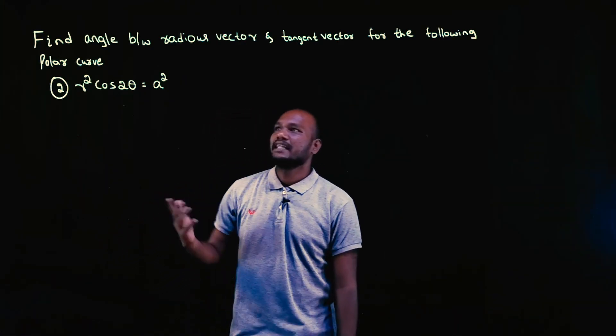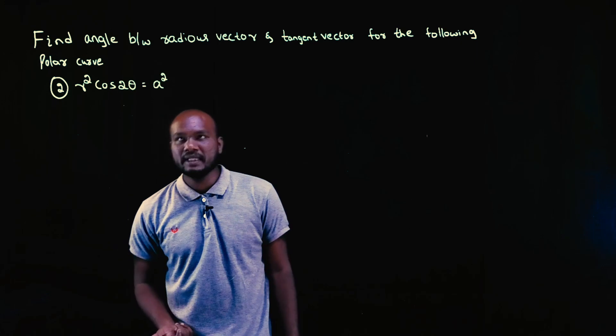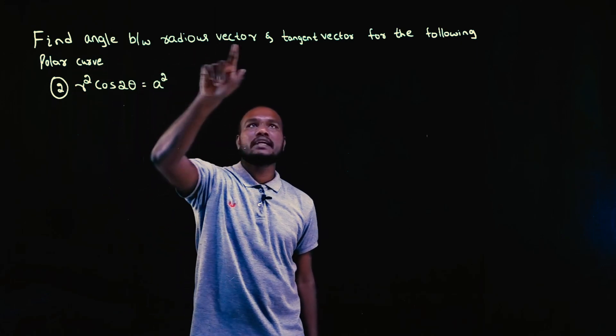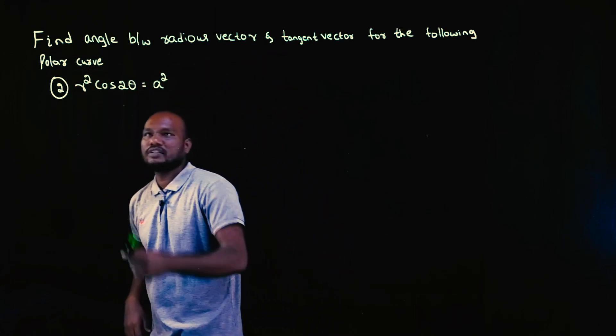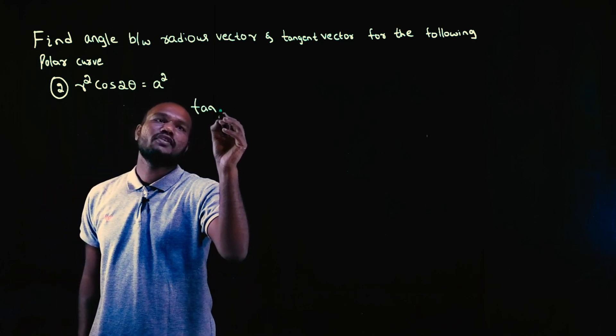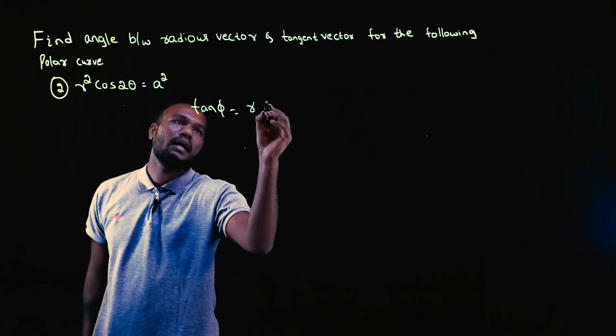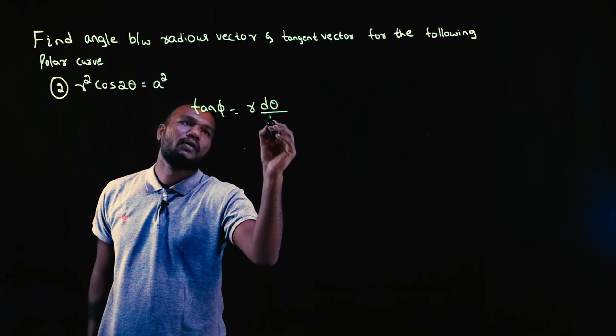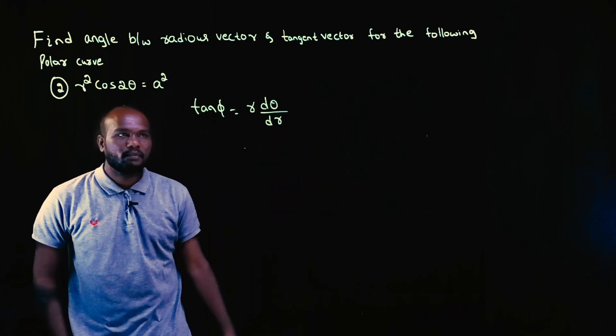Okay, let's go to the next question. In this question, we have to find the angle between the radius vector and tangent vector for this polar curve. What is the formula? Tan φ is equal to r times dθ/dr. This is the formula.